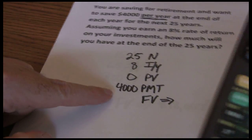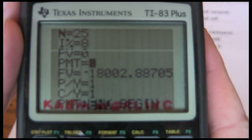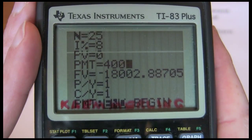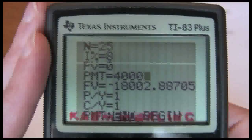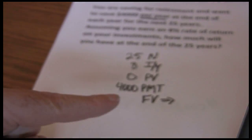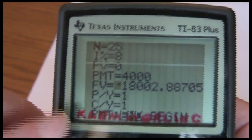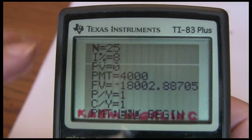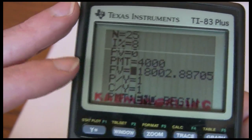So I just zero that out. My payment is the $4,000 per year that I'm putting away into my retirement plan. And now I want one period per year on here. So I leave that P/Y at 1. And I want to solve for future value.